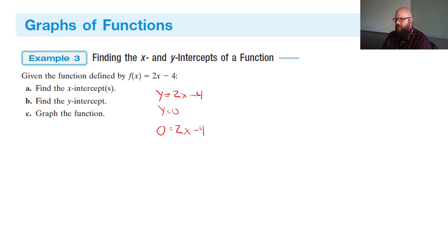So if we add 4 to both sides, we should get 2x = 4. So how do we get rid of that 2? Well, we're going to divide.